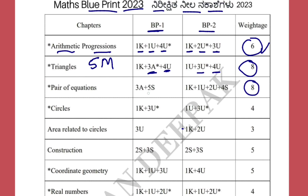For Pair of Linear Equations, you can expect a four or five mark question. Skill indicates graph question here — skill means construction and graph. You can expect one graph question from this chapter, three application-based questions or one mark in objectives, one mark in understanding, and two marks in understanding.